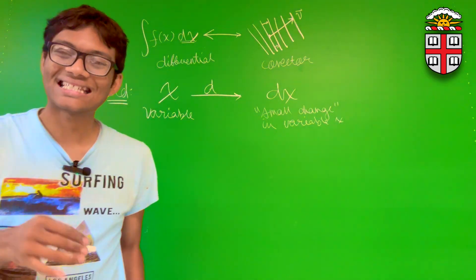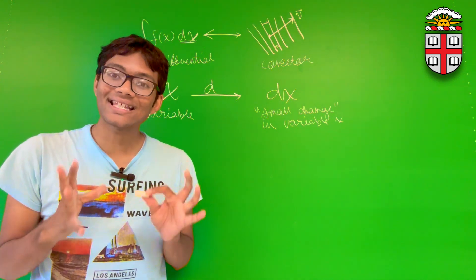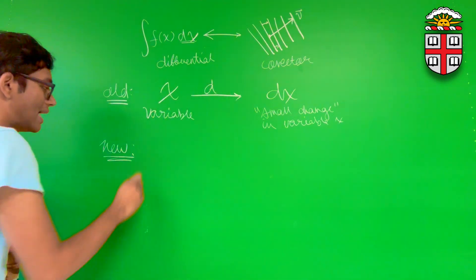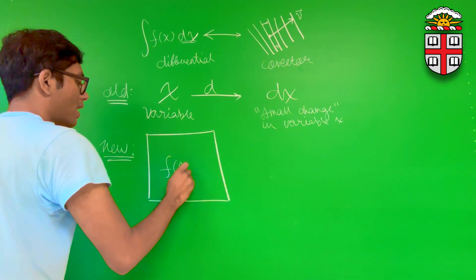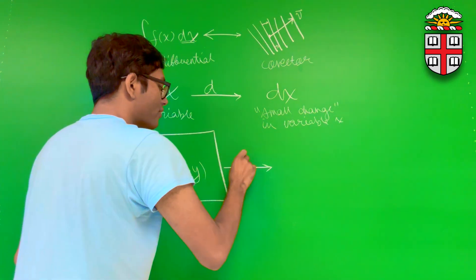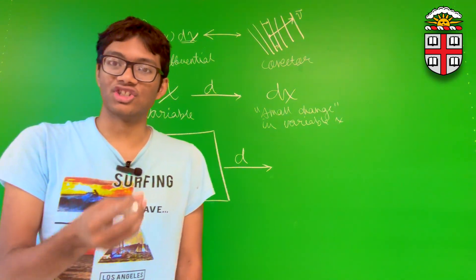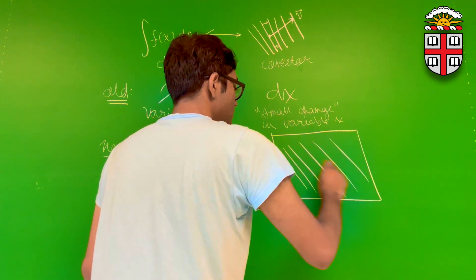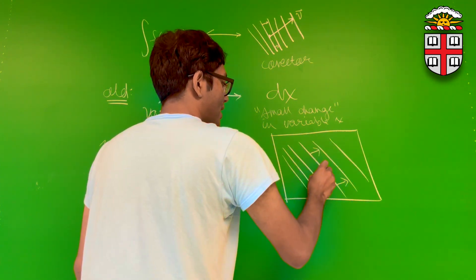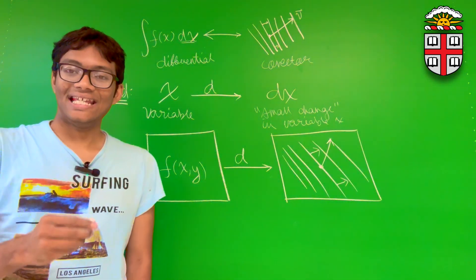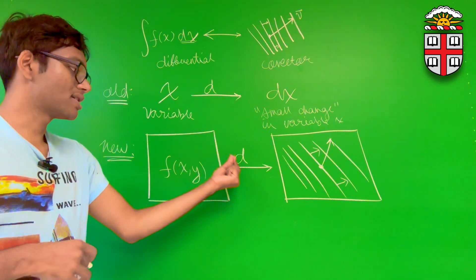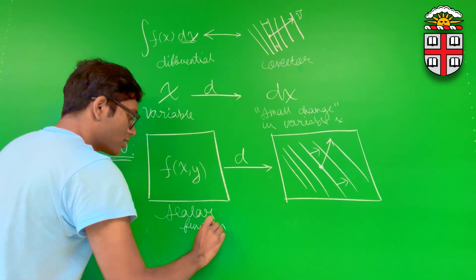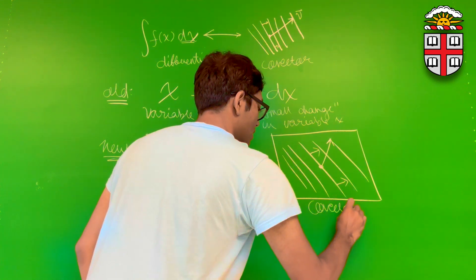But now what we're proposing is that d does something completely different. It takes a scalar function. This is our new interpretation of what this operator d does. If you have a scalar function f(x, y), then d converts that scalar function into the contour lines — the co-vector field — of that scalar function, with a certain direction of ascension and an origin with some vector.